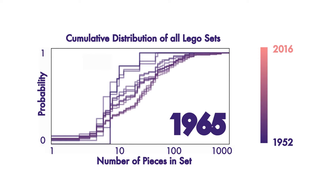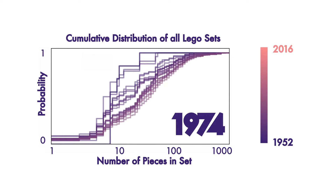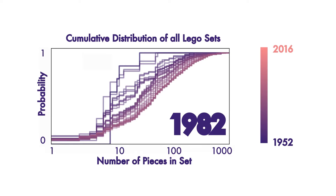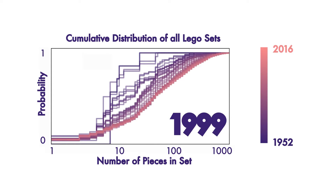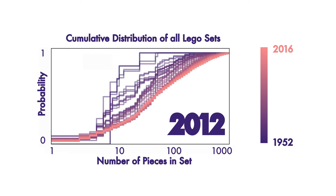Applying this new tool to the time series data shows that LEGO has indeed changed over time — more variety of kits, larger kit sizes, and generally all progressing in the same direction: more, more, more year after year.